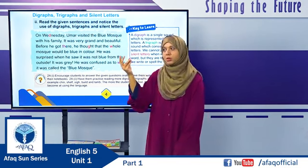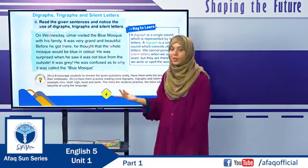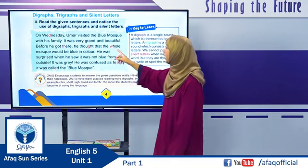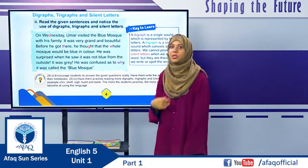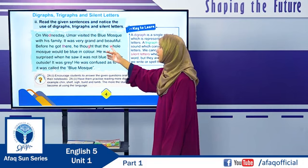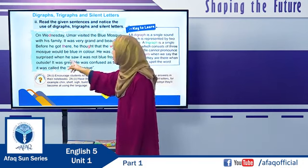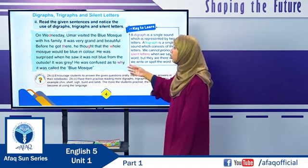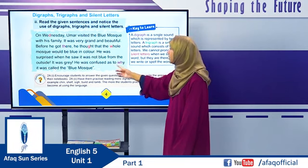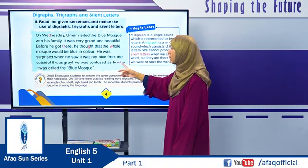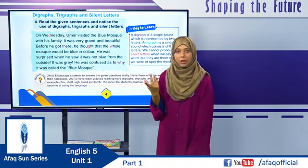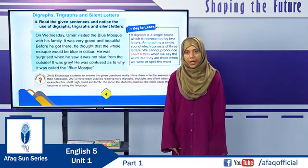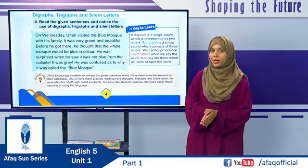In 'whole,' W is written but we do not pronounce it — W is a silent letter in 'whole.' He was surprised when he saw it was not blue from the outside — it was gray. He was confused as to why it was called the Blue Mosque. In the word 'why,' W and H are two letters but produce only one sound — so 'wh' is a digraph. In this paragraph, we learned about the use of digraphs and silent letters.